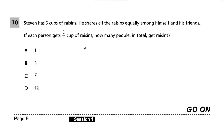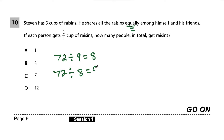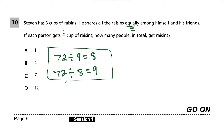Question 10. Stephen has 3 cups of raisins and shares them equally. If each person gets 1/4 cup, how many people get raisins? It helps to know divisibility: if 72 ÷ 9 = 8, then 72 ÷ 8 = 9. Similarly, if 3 divided by some number equals 1/4, then 3 ÷ (1/4) gives us the mystery number.